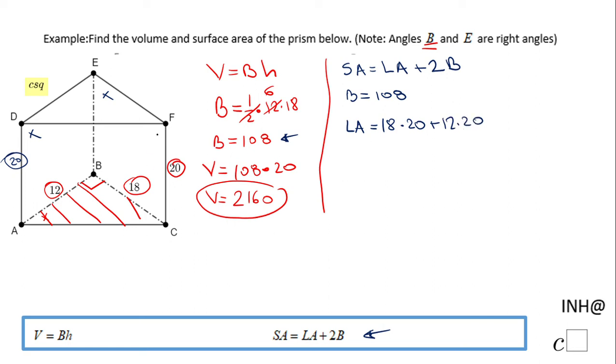And we have one more face, the front one, which is 20 times this side AC, if you want to call it like that, which you do not know. I'm going to call it X. So, we really have to find that X first.